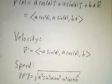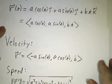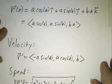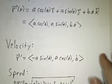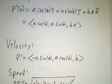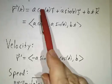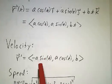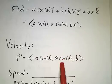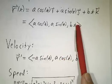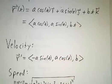For the velocity, we want to take the derivative of the position. The derivative of a·cos(t) is −a·sin(t). The derivative of a·sin(t) is a·cos(t). The derivative of b·t is b.